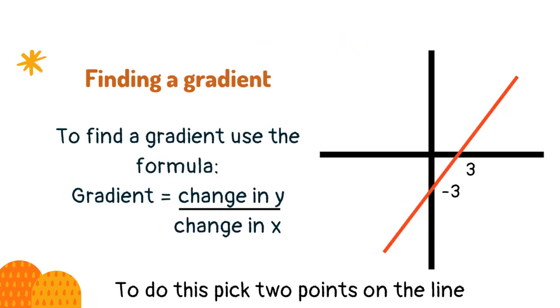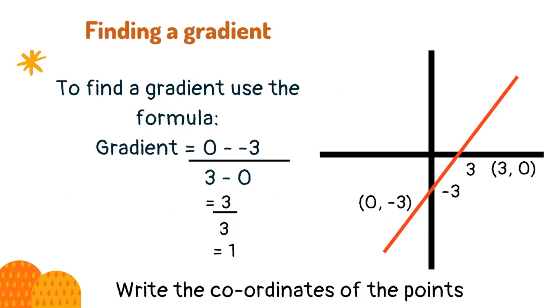To find a gradient use the formula: Gradient equals change in y divided by change in x. The change in y is y final position minus y original position.